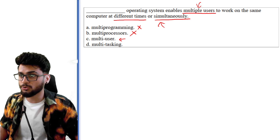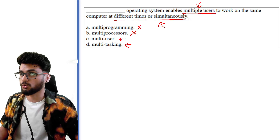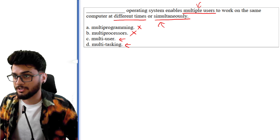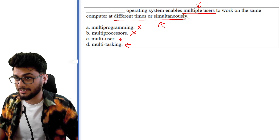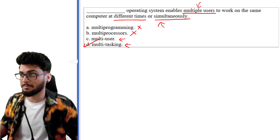So you have multiple users and at the same time you can work with multiple things. It can be either multi-user or multitasking. But if you would like to write the right answer, it would be multitasking.